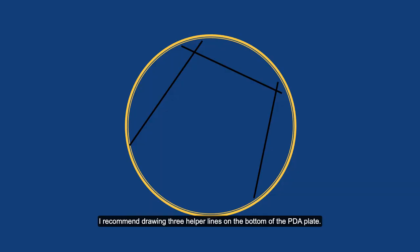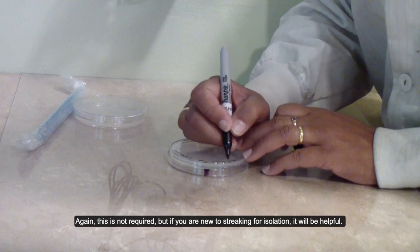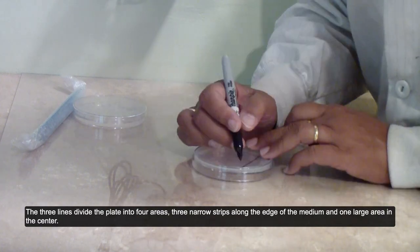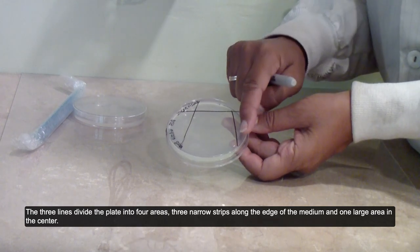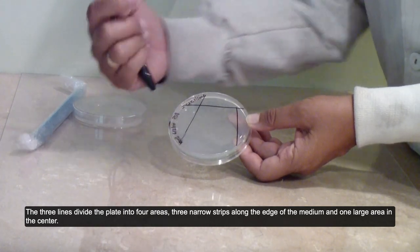I recommend drawing three helper lines at the bottom of the PDA plate. Again, this is not required, but if you are new to streaking for isolation, it will be helpful. The three lines divide the plate into four areas: three narrow strips along the edge of the medium and one large area in the center.